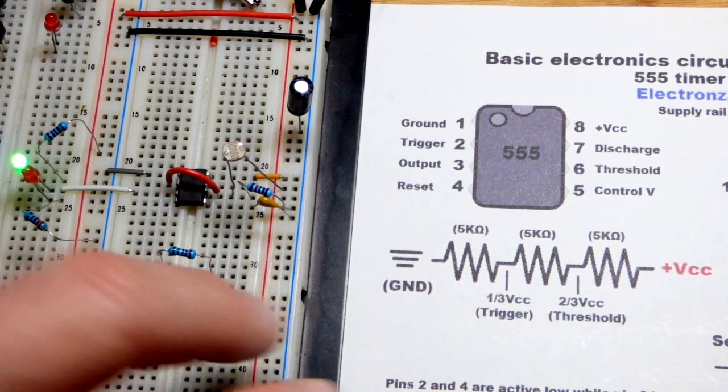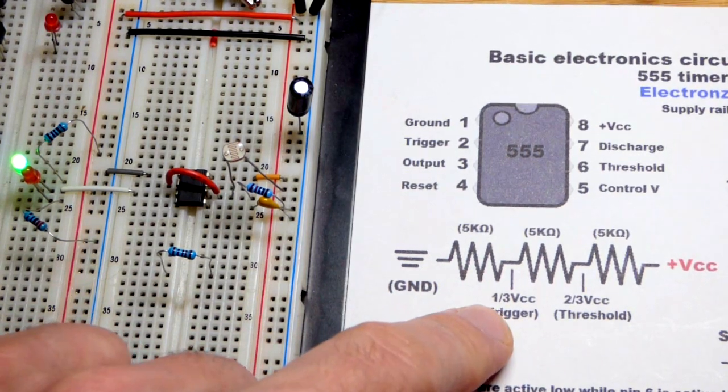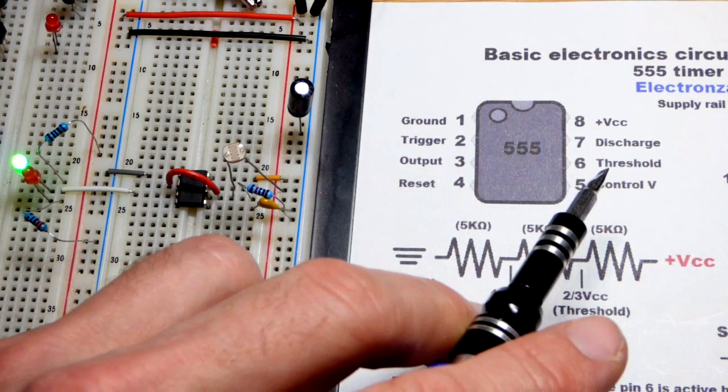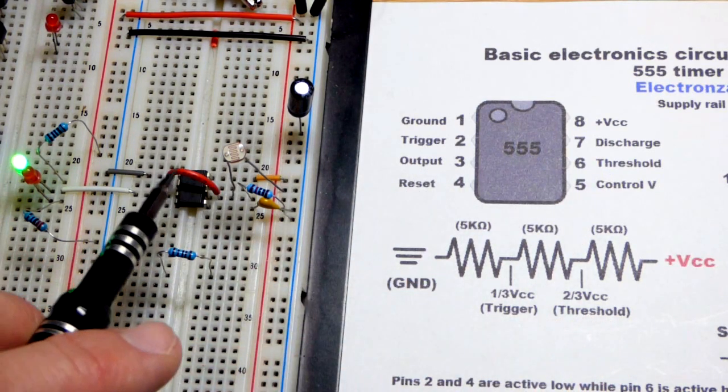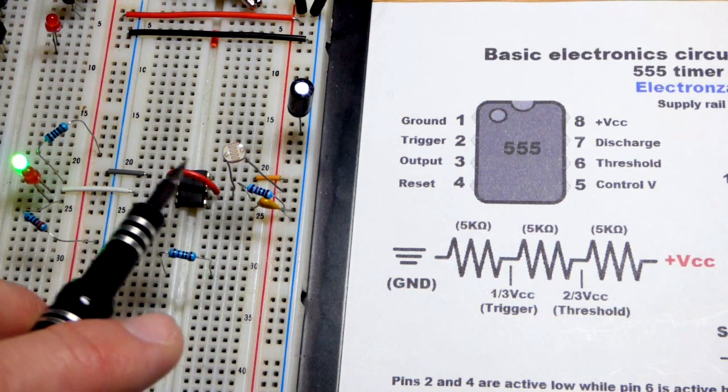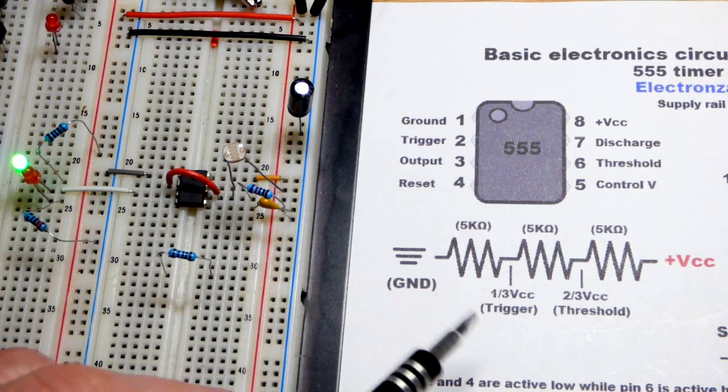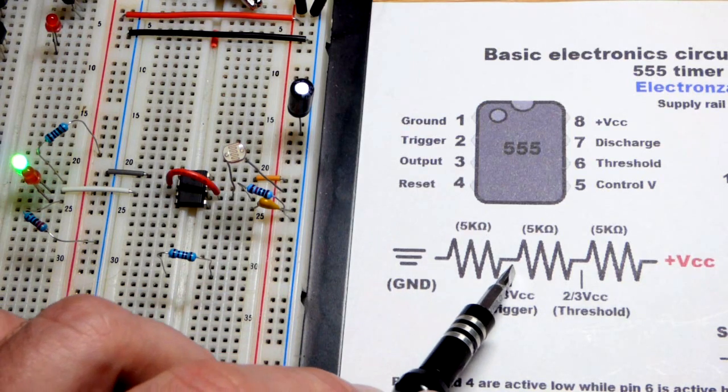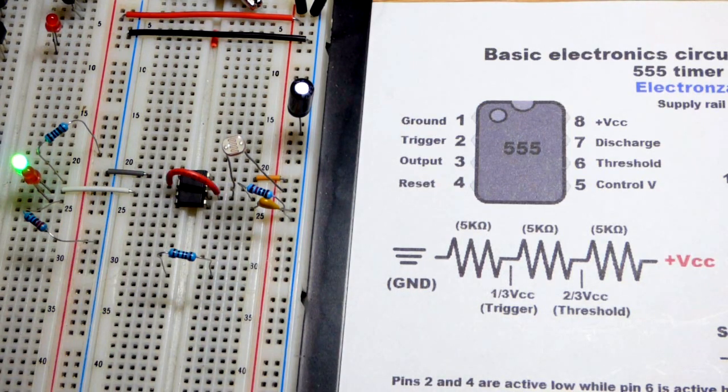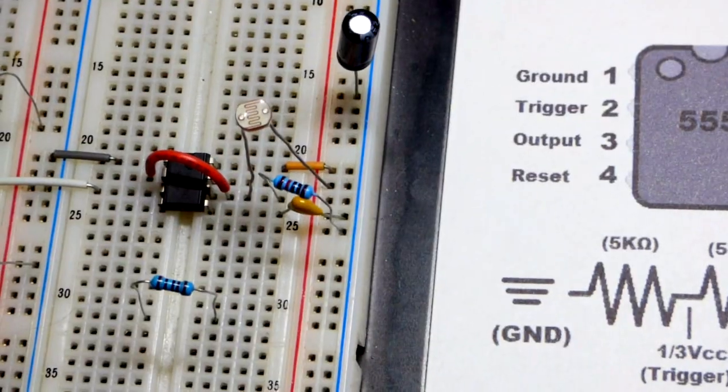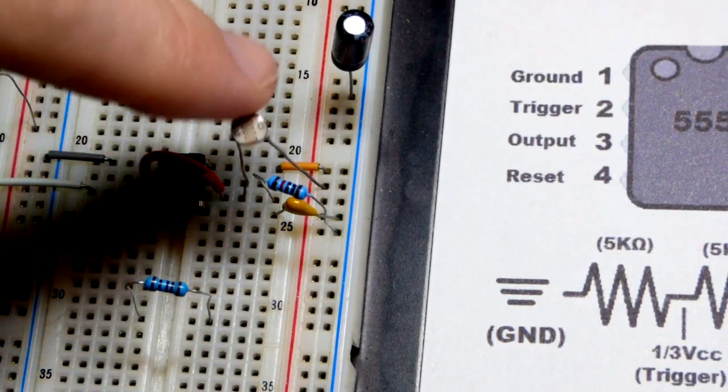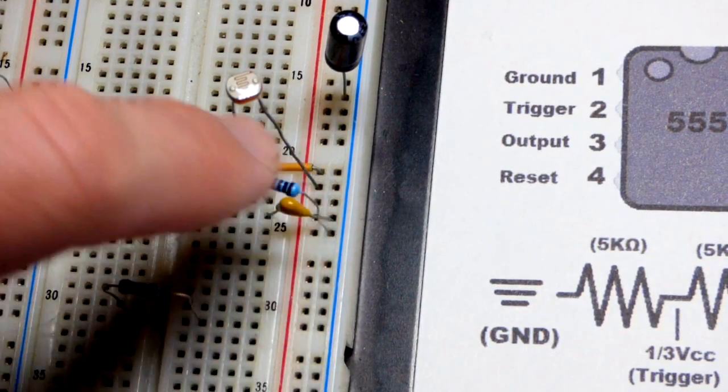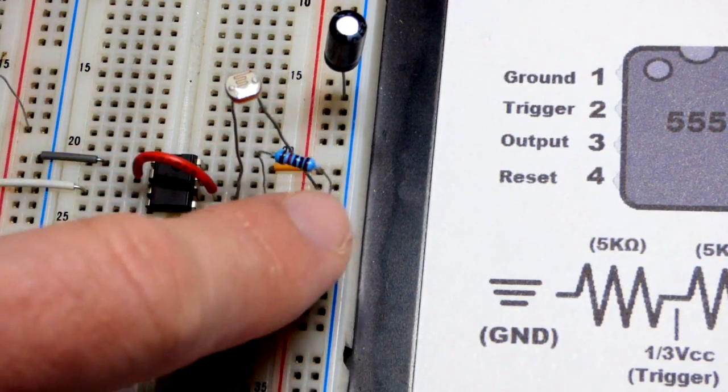The way that this works is we have pin number 2, the trigger pin, and pin number 6, the threshold pin, tied together with a jumper. It's making a direct connection. The trigger pin waits for one-third of the power supply voltage. We have a light variable voltage divider. On the positive side, we have the light-dependent resistor, and on the negative side, we have a fixed resistor.